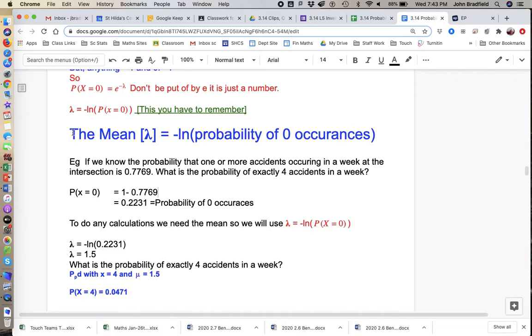Now, we go to the big blue statement, and we can use that because the 0.2231 is the probability of zero occurrences. So, we reach for a Casio. The mean is going to equal the negative natural log of 0.2231, and boom, here's your mean: 1.5, an average of 1.5 accidents per week.